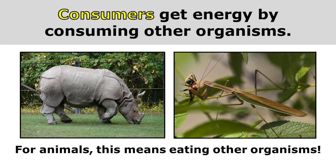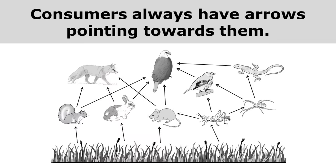Consumers get energy by consuming other organisms. For animals, this means eating other organisms. This rhino is consuming grass and this praying mantis is consuming a bee. Remember that the arrows point toward the organism that's eating something, so consumers always have arrows pointing towards them.